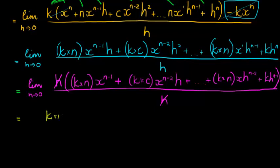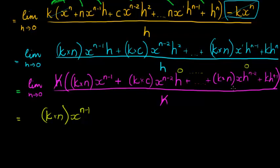So what do I get? The first term has no h, so nothing to substitute there — it stays. Every other term contains h as a factor; substituting h = 0 makes those terms 0. The last term k·h^(n-1) also becomes 0. So all terms except the first vanish.